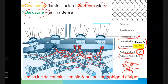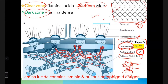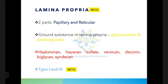In the lamina densa, type 4 collagen is surrounded by heparan sulfate, giving a chicken wire or net-like appearance. The lamina lucida contains two important proteins: laminin and the bullous pemphigoid antigen. To summarize: lamina lucida and densa contain type 4 collagen; anchoring fibrils contain type 7; surrounding collagen fibers are type 1 and type 2.